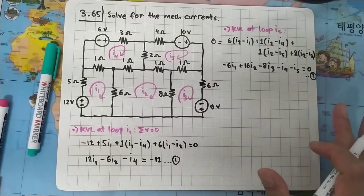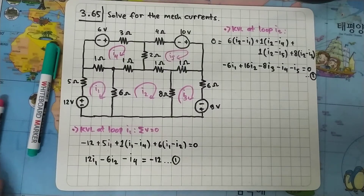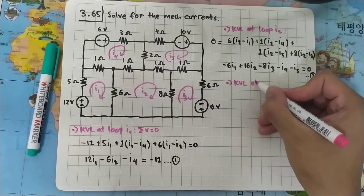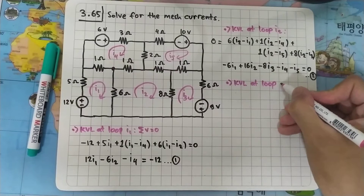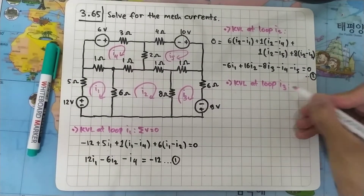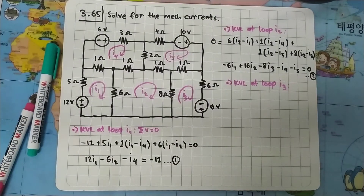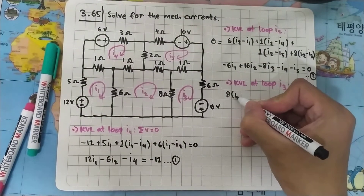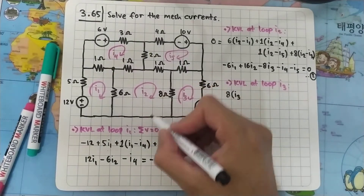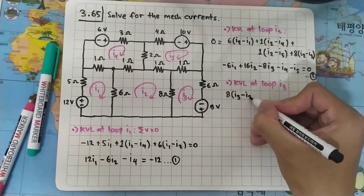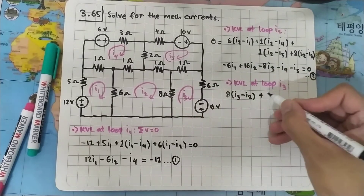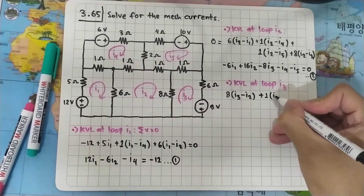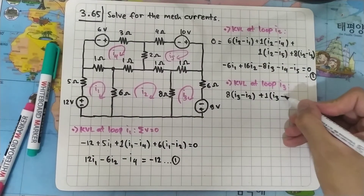So far we have two equations and need three more. Let's do KVL at loop I3. We start with the 8 ohm resistor with focus on I3, and here I2 is flowing in the opposite direction so minus I2. Then we move on to the 1 ohm resistor again focusing on I3, but I5 is flowing in the opposite direction, so minus I5.